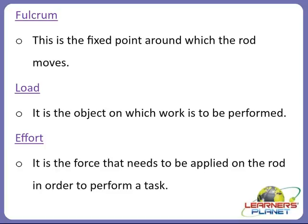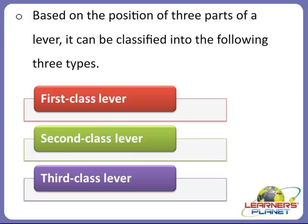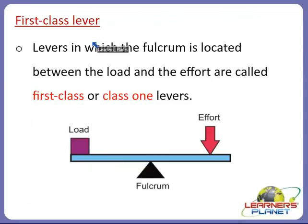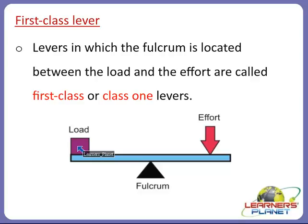The components of a lever can be arranged in three different ways to give three different kinds of lever. Based on the position of fulcrum, load, and effort, it can be classified into: first class lever, second class lever, and third class lever. Now let us discuss about each of them in detail. The first one is the first class lever.